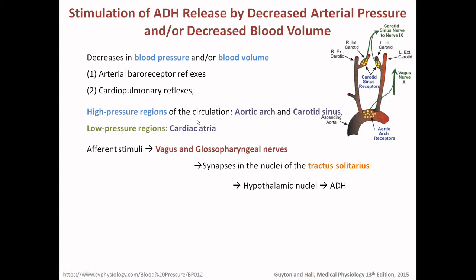When the low-pressure region of the cardiac atrium signals, it means there is a scarcity of water, so we need to preserve it. As a schematic summary, there are three types of sensors: blood pressure, blood volume, and the osmoreceptor present in the control center. High blood pressure or high blood volume is sensed in the baroreceptors of the aortic arch and carotid sinus, and low pressure is sensed in the cardiac atrium.